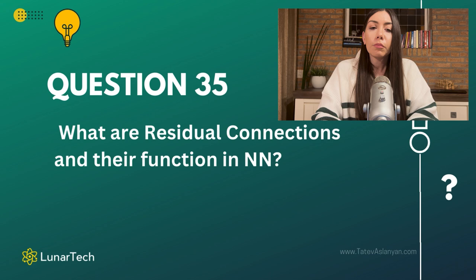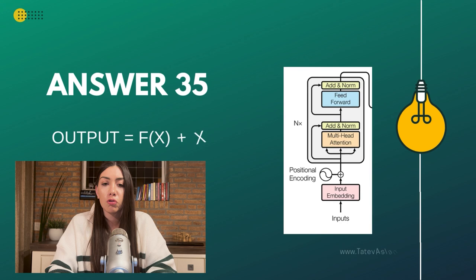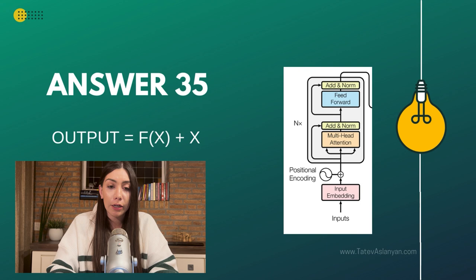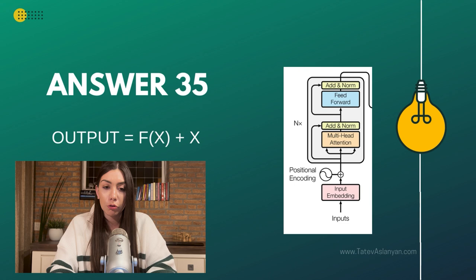What the residual connection does is that, unlike the typical neural network where the input is simply transformed through the weights and bias factors into the corresponding activations to produce the output, in the case of residual connections, we are adding the original input directly on top of the output of this layer. This is often referred to as a shortcut or a skip connection.